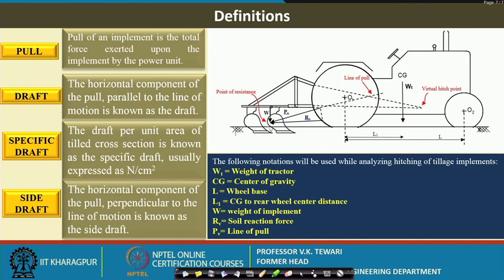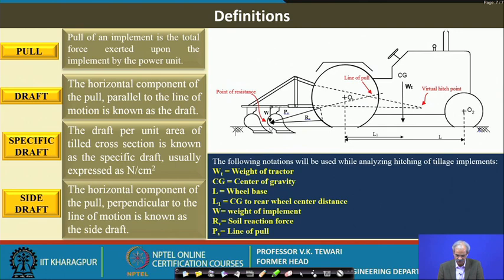In this slide I have given a very simple diagram which will tell you how the tractor is connected to a two-bottom moldboard plow. Certain forces — for example, the reaction forces at the front axle and the rear axle — I have not shown them purposely. I just want to show some of the important things first, and subsequently when we go to different slides and analytical treatments we will know more details.